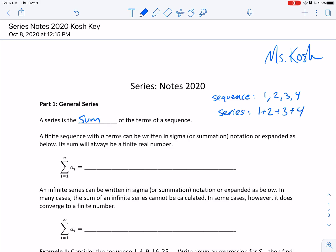A finite sequence, meaning it has a limited number of terms, can be written in sigma, or sometimes we call it summation notation, or expanded. Its sum will always be a finite real number.